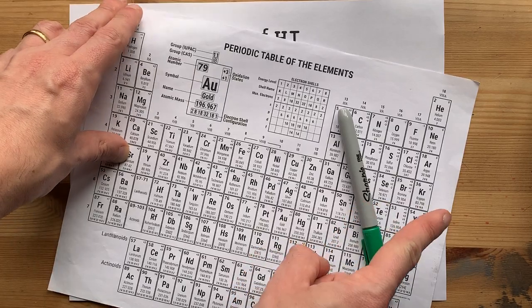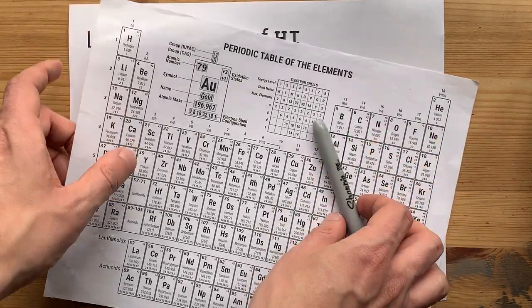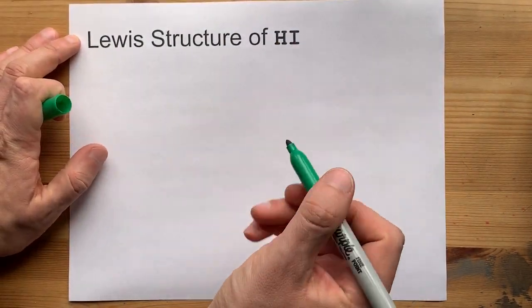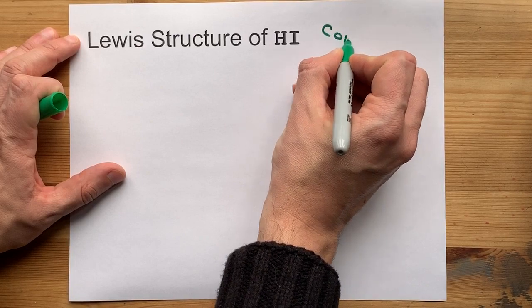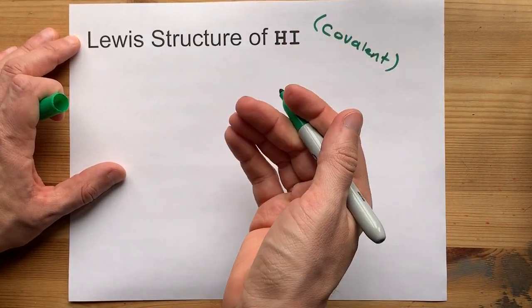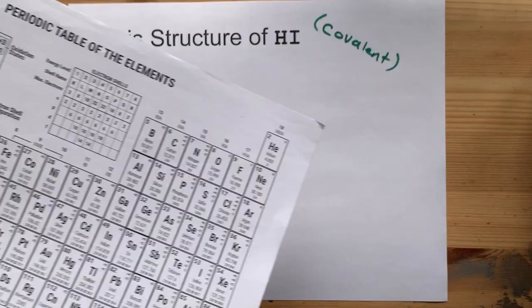And iodine comes from the right-hand side of the staircase. It's also a non-metal because all of these are non-metals. And so this is two non-metals bonding together. That makes it a covalent bond, which means they're going to share electrons to become stable. Let's find out how that gets arranged.